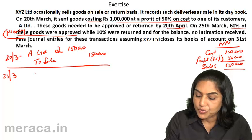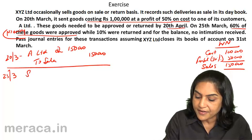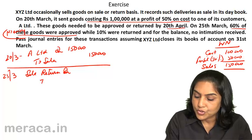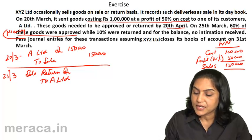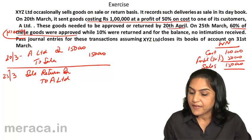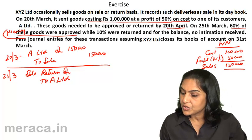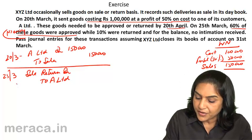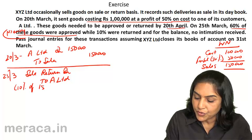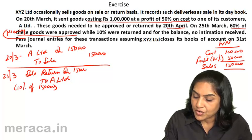For the 10% of goods that are returned, the entry would be: Sales Return Account debit to A Limited. The value is 10% of the sale value of ₹1,50,000, which comes to ₹15,000.